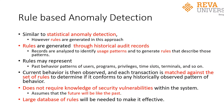The current behavior of a user is observed, and all transactions the current user makes are matched against the set of rules in the rule base to determine if this particular current behavior confirms to any historically observed pattern of behavior. If it confirms to those rules, then the user is an authorized user. If it does not confirm, then the user is an intruder. This does not require knowledge of security vulnerabilities within the system — it just works on the assumption that the future will be like the past. This technique requires a large database of rules to be effective.